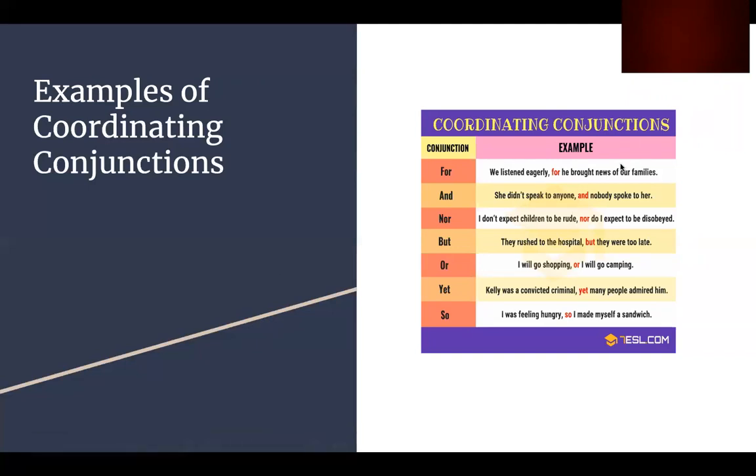We have for, and, nor, but, or, yet, so. Memorizing these coordinating conjunctions not only helps with colons, but it also helps with commas and general English grammar.